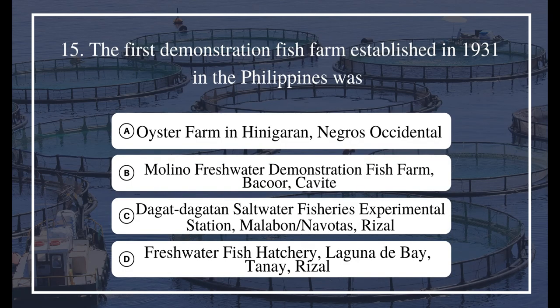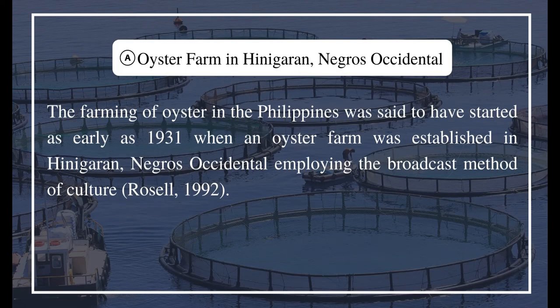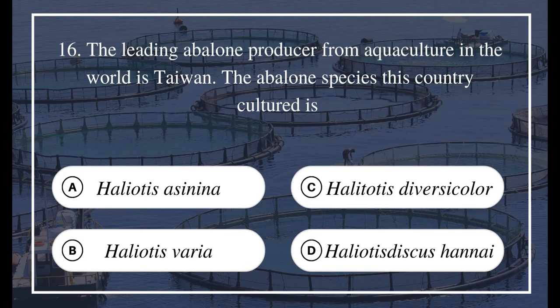Question 15: The first demonstration fish farm established in 1931 in the Philippines was: a) Oyster farm in Hinigaran, Negros Occidental, b) Malino freshwater demonstration fish farm, c) Bacoor/Cavite sea/dagat-dagat saltwater fisheries experimental station Malabon/Navotas, d) Rizal freshwater fish farm, Forestieri, Laguna de Bay. The answer is A, oyster farm in Hinigaran, Negros Occidental. The farming of oysters in the Philippines is said to have started as early as 1931 when an oyster farm was established in Hinigaran, Negros Occidental, employing the broadcast method of culture (Rosell, 1992).